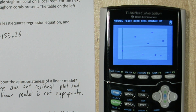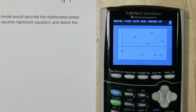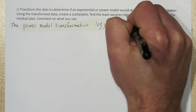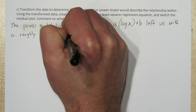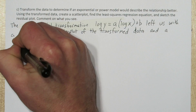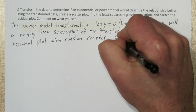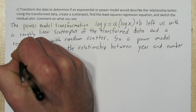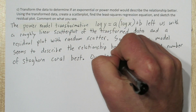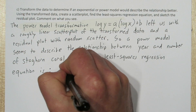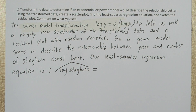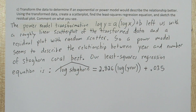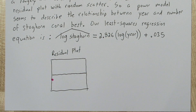So it appears the best model for this data is a power model. We'll say a power model transformation — log y equals a log x plus b — left us with a roughly linear scatter plot of the transformed data and a residual plot with random scatter. So a power model seems to describe the relationship between years and number of staghorn coral best. Our least squares regression equation is: predicted log of number of staghorn coral equals 2.826 times the log of the year plus 0.35. And here's a sketch of our residual plot showing the random scatter.